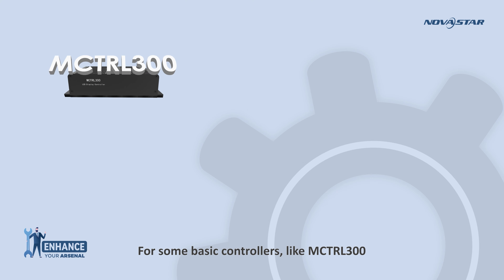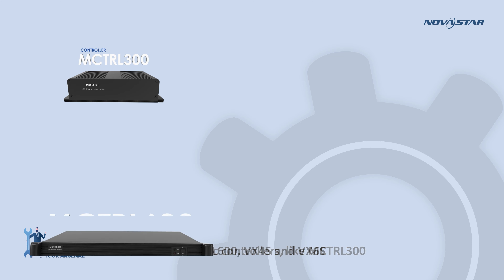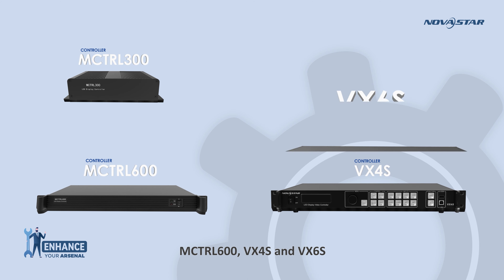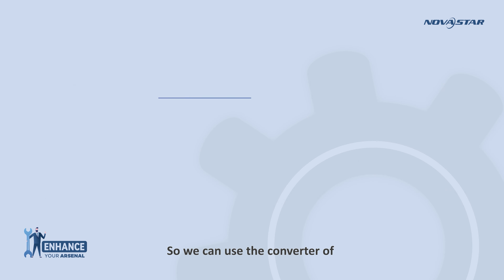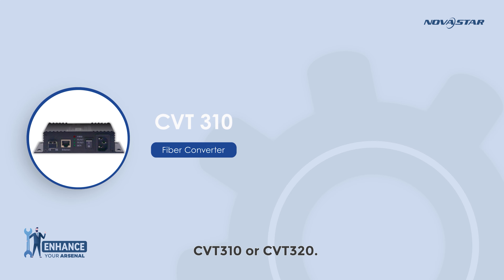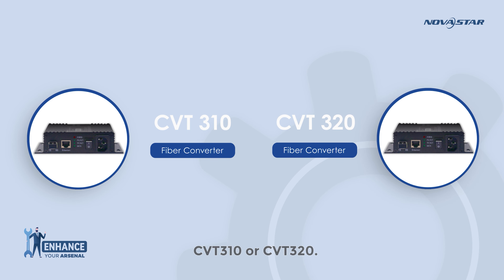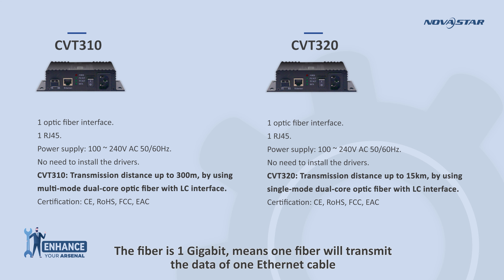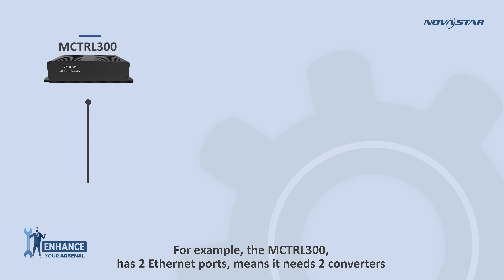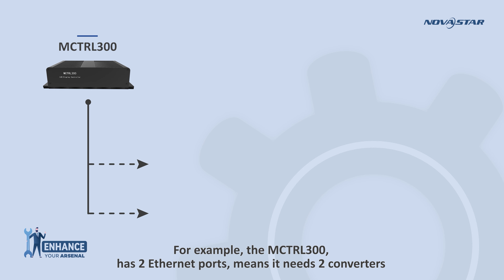For basic controllers like M-Control 300, M-Control 600, VX4S, and VX6S, all of these only have Ethernet output ports, so we can use the converter CVT310 or CVT320. This kind of converter only has one fiber port and one Ethernet port. One fiber transmits the data of one Ethernet cable — for example, the M-Control 300 has two Ethernet ports, meaning it needs two converters.